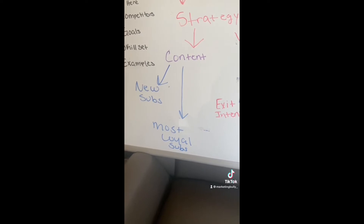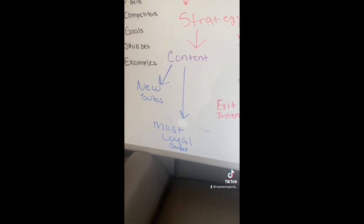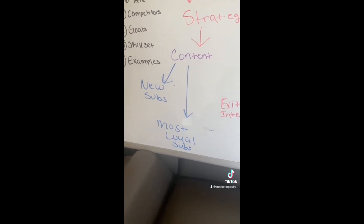Once you understand tagging, you're ready to move into content. There are going to be two subcategories for your content: new subs and most loyal subs. For your new subs, you want to send them things like an email welcome series, a brand introduction, and nurturing content relevant to your industry to get them acquainted, build trust, and establish yourself as an authority figure. For your most loyal customers, they're already bought in and much deeper into the buying process, so you want to send them things like special offers, exclusive invites, a newsletter, company behind the scenes, and so on.